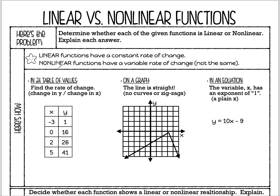First, we're going to start with a few definitions. Linear functions have a constant rate of change. A constant rate of change means the same thing happening over and over again. For example, if you're saving money in a bank account and you save $50 every single week, that would be a constant rate of change — always plus 50, plus 50, plus 50.